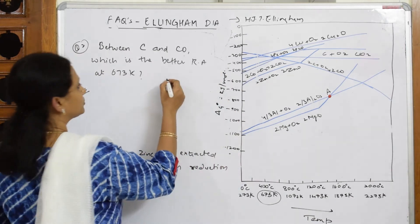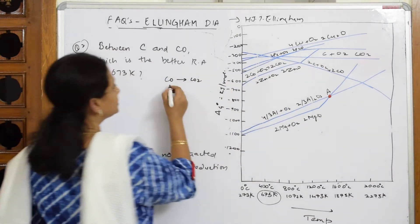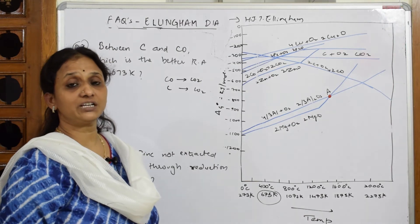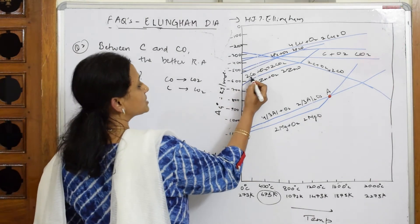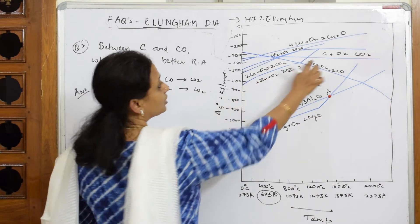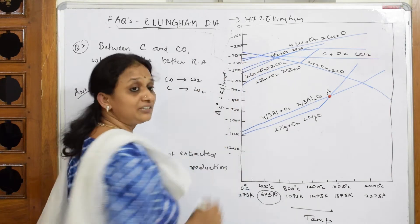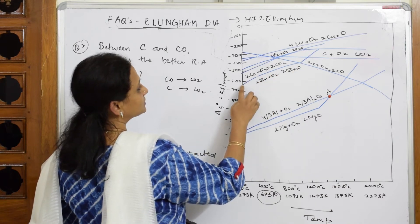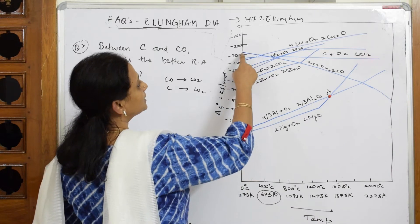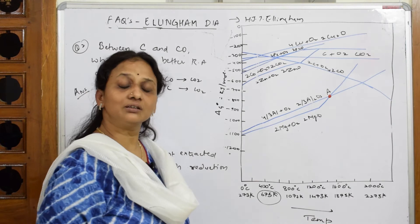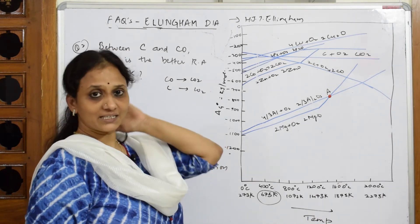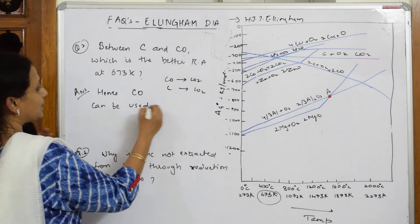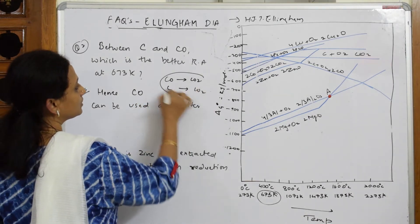They are asking: should I use carbon or carbon monoxide to form CO₂? Higher the negative Gibbs free energy value, the better the reducing agent. For carbon monoxide, the negative value is minus 600. For carbon, the negative value is minus 350. Carbon monoxide has the higher negative value, hence CO can be used as the better reducing agent.